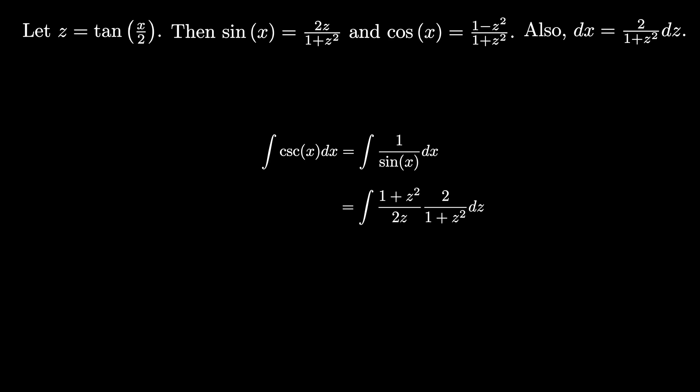Notice we replaced sin x with 2z over 1 plus z squared, and we replaced dx with 2 over 1 plus z squared dz. But then the 2's cancel in the numerator and the denominator, and the 1 plus z squared cancels in the numerator and denominator, and we're left with the integral of 1 over z dz. But this is just the natural log of the absolute value of z plus a constant.